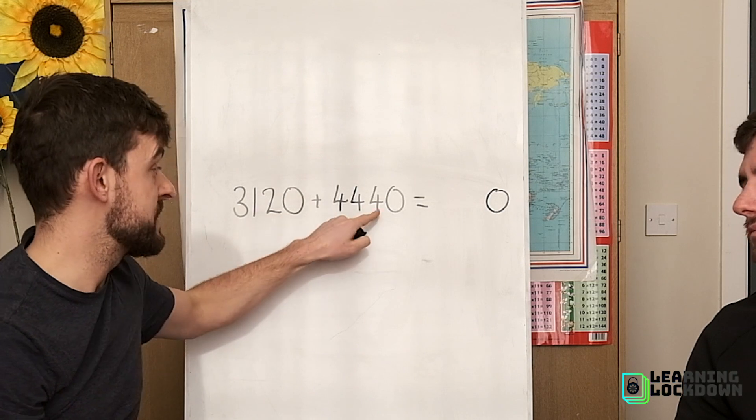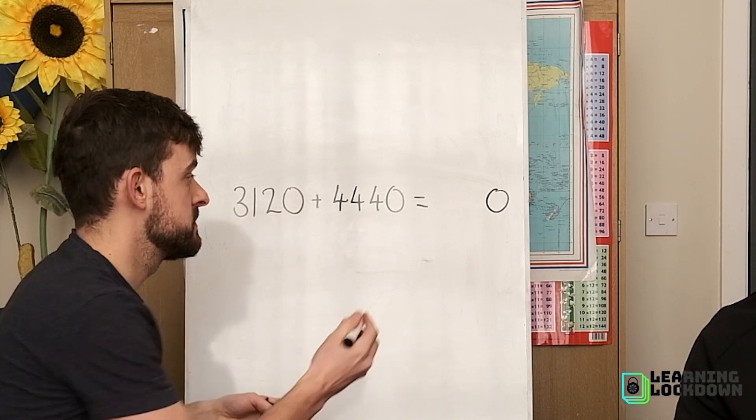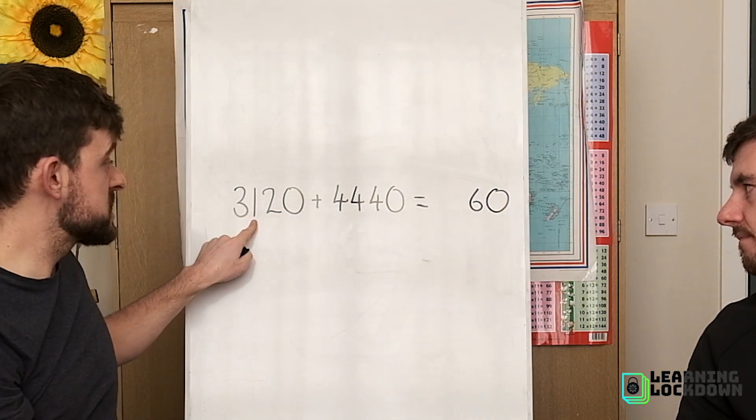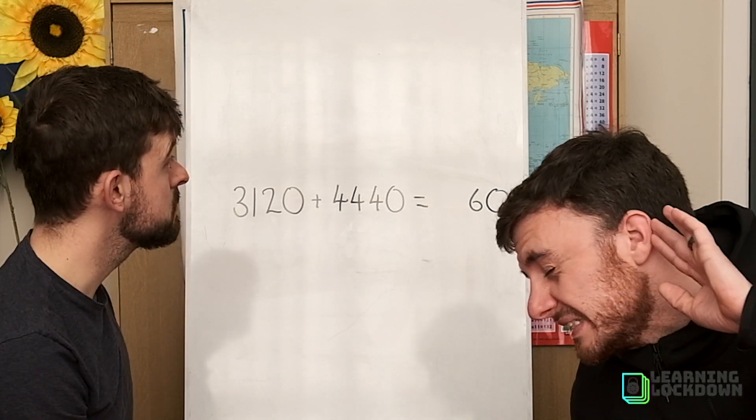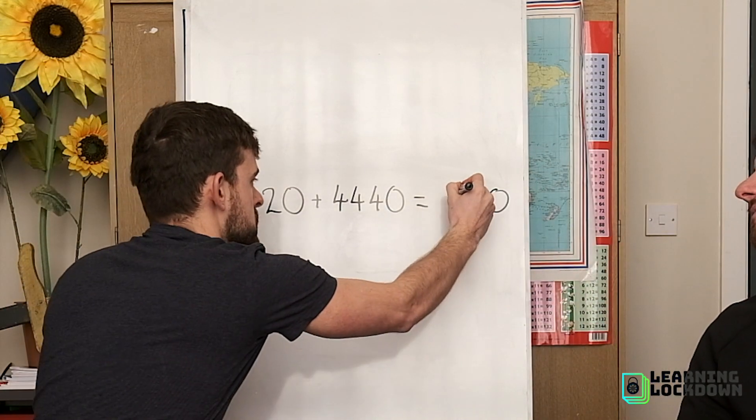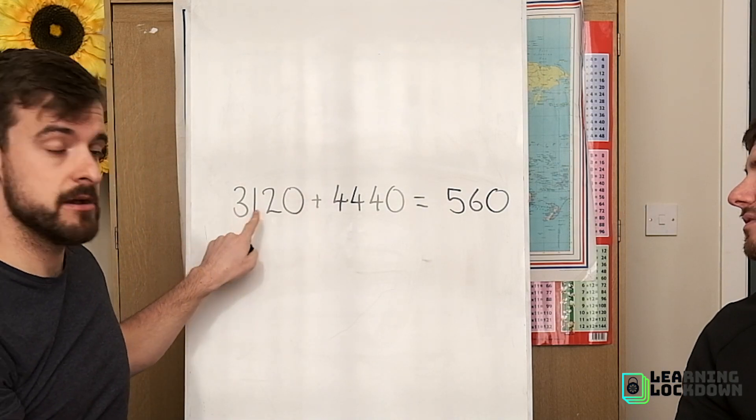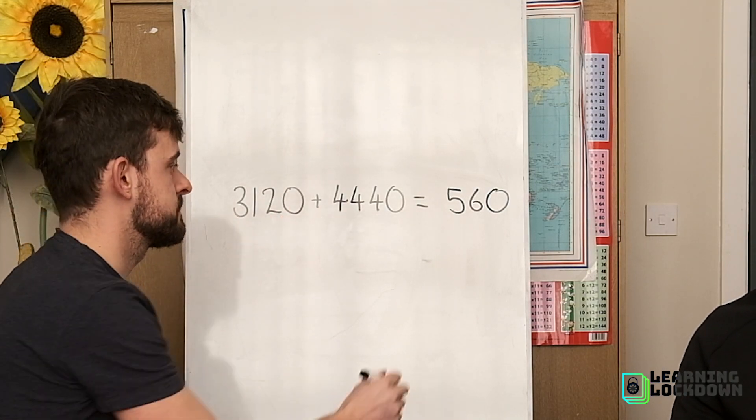Let's have a look. Zero lots of one add zero lots of one. Two lots of ten add four lots of ten, six lots of ten. One lots of a hundred add four lots of a hundred, five lots of a hundred. And three lots of a thousand add four lots of a thousand, seven thousand.